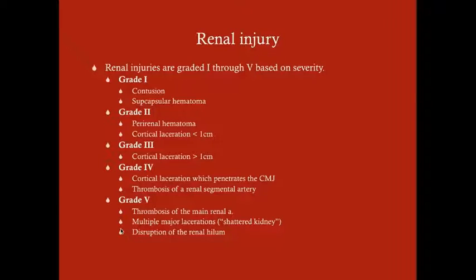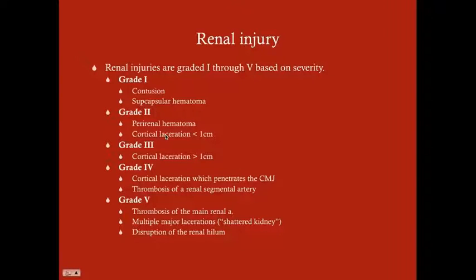Renal injuries are graded one through five based on severity. Don't memorize this for the USMLE, but know that there is a spectrum. Grade one is a contusion or subcapsular hematoma — just a hematoma between the capsule and parenchyma, not entering the tissue. Grade two is a perirenal hematoma extending into the parenchyma with a cortical laceration less than one centimeter. Grade three is a cortical laceration greater than one centimeter.